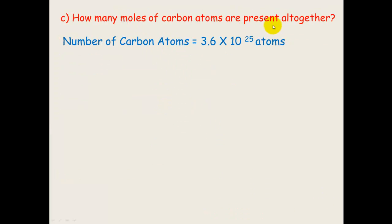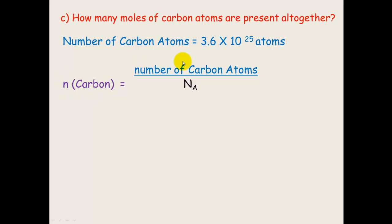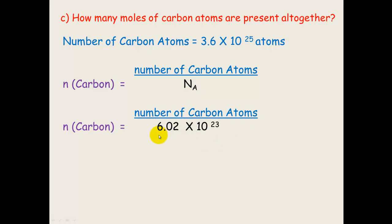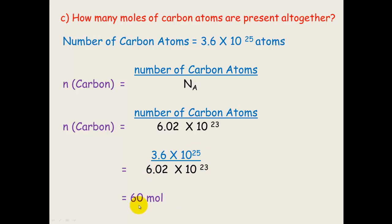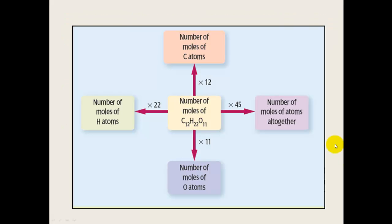Part C asks how many moles of carbon atoms are present altogether — we already worked this out in part A, but here's how to work backwards. The number of carbon atoms was 3.6×10²⁵. Dividing by Avogadro's constant (6.02×10²³) gives 60 moles of carbon atoms. Always check your answer matches what the question asked. To summarise the ratios: multiply moles of sucrose by 22 for moles of hydrogen, by 12 for moles of carbon, by 11 for moles of oxygen, and by 45 for total moles of atoms.